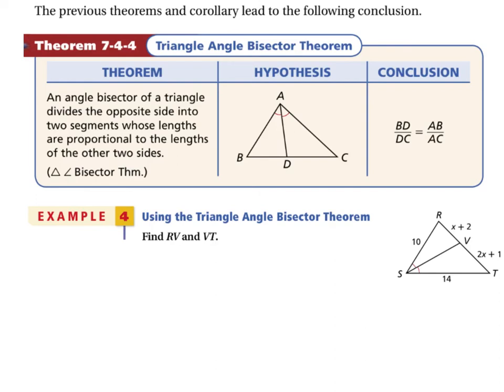In example 4, using the triangle angle bisector theorem, we want to find the lengths of RV and VT. We know that these are the sides opposite the bisected angle. We could say that X plus 2, divided by 2X plus 1, would be equal to 10 divided by 14.